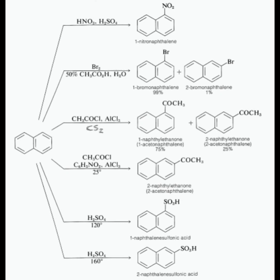The next reaction is treatment with acetyl chloride. Naphthalene treated with acetyl chloride in presence of aluminium chloride and carbon disulfide gives 1-acetylnaphthalene and 2-acetylnaphthalene. The percentage of 1-acetylnaphthalene is 75% whereas 2-acetylnaphthalene is 25%.